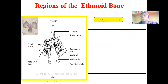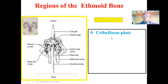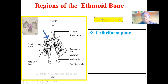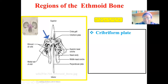Let's look at the structural components of the ethmoid bone. The ethmoid bone has a number of sub-regions. The first is the cribriform plate of the ethmoid. The cribriform plate is a plate located transversely within the ethmoid bone, running horizontally. At this position, it forms the roof of the nasal cavity, with the nasal cavity at the inferior part and this horizontal plate running above it.